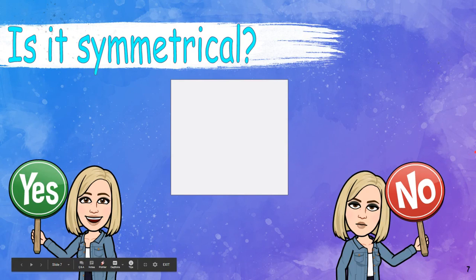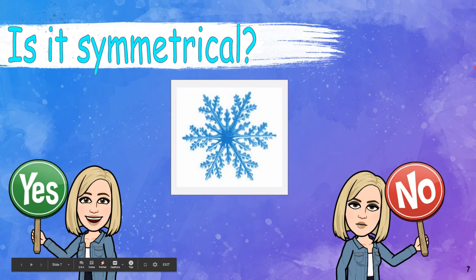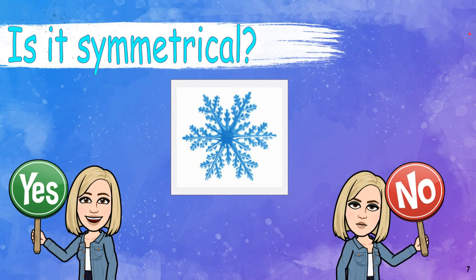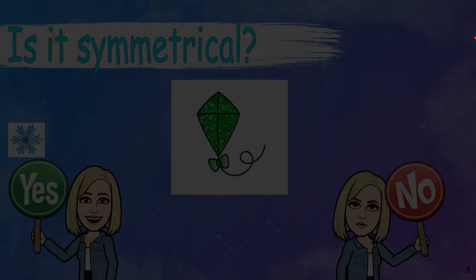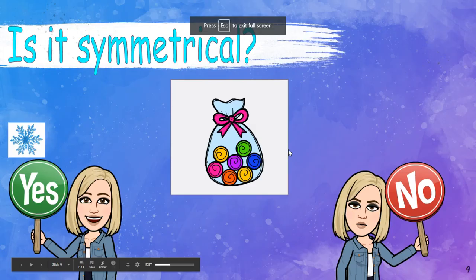So let's look at some items and decide: is it symmetrical? The snowflake — what do you think? Is it symmetrical? Yes or no. So if we put a line right down the middle, would you have the same thing on both sides? Yes. What about this kite? Is it symmetrical? If we drew a line right down this way, would it be the same on both sides? Yes.